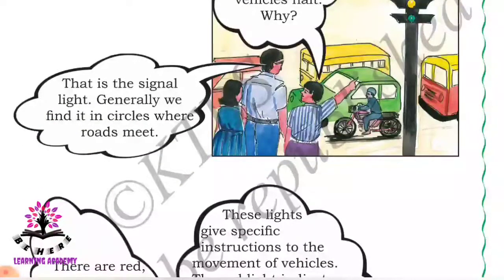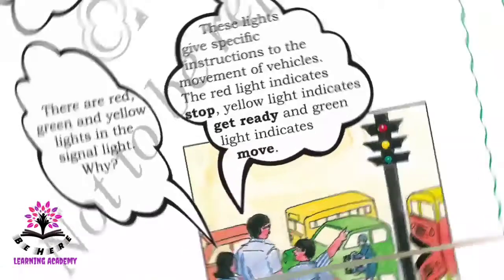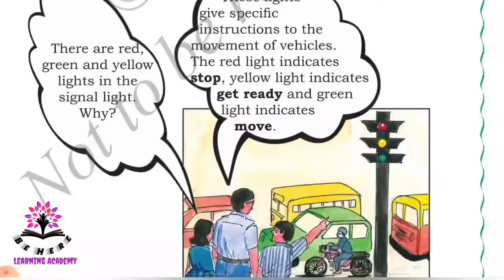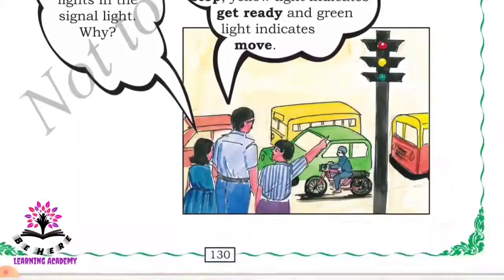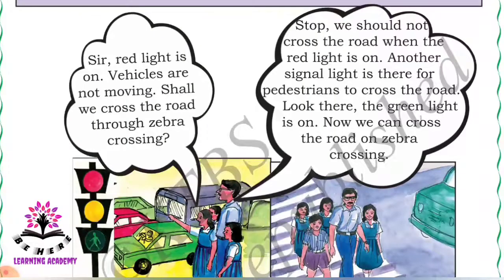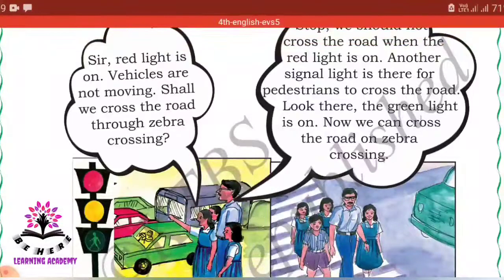The red light is on and all the vehicles have stopped. Why? That is the signal light. Generally we find it in the circles where roads meet. There are red, green, and yellow lights. The red light indicates stop, the yellow light indicates get ready, and the green light indicates move. When the red light is on, we should not cross the road.